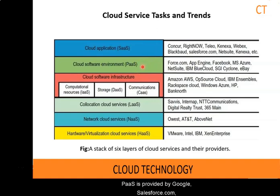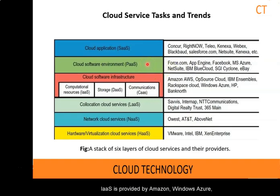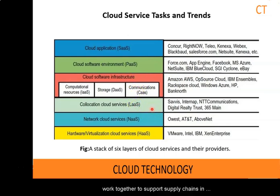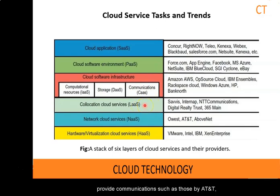Platform as a service is provided by Google, Salesforce.com and Facebook among others. Infrastructure service is provided by Amazon, Windows Azure and Rackspace among others. Collocation service requires multiple cloud providers to work together to support supply chains in manufacturing. Network cloud services provide communication, such as those by AT&T, Quest and AboNet.